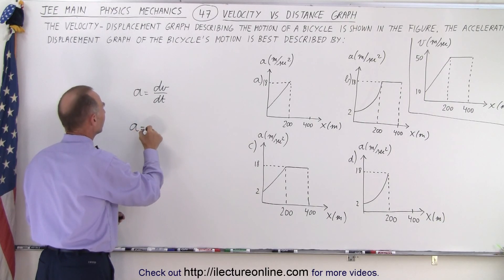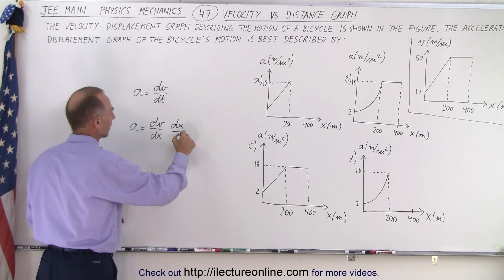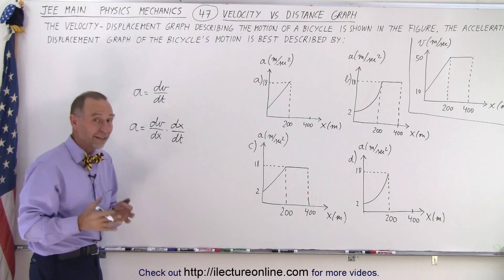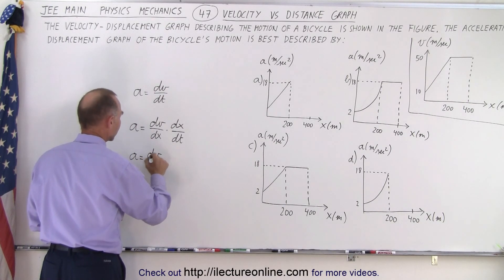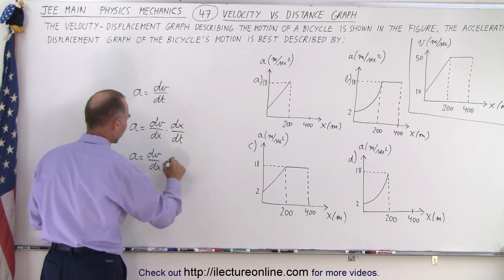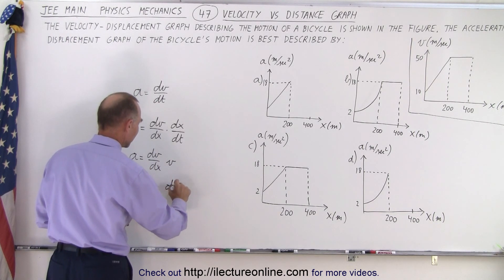And of course dx dt, that's the definition of velocity. So acceleration is equal to dv dx times velocity or better yet, it's equal to velocity times dv dx.